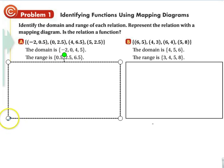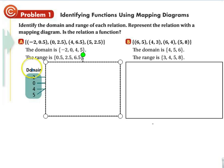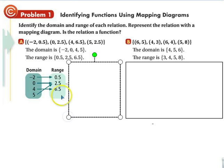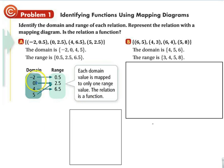Now, here's what a mapping looks like. A mapping is where we take the values in the domain, and we draw them in a circle. And then we take the values in the range, and we draw them in a circle. And we draw an arrow from one value to what it is paired with. So the number negative 2 is paired with 0.5. The number 0 is paired with 2.5. 4 is paired with 6.5. And 5 is paired with 2.5. Now, is the relation a function? Each value of x goes to one value of y. Well, yes it is. Even though we have the number 0 going to 2.5, and we have the number 5 going to 2.5, each value of x has one value of y.